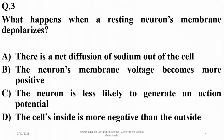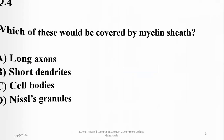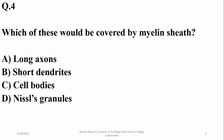What happens when a resting neuron's membrane depolarizes? When a resting neuron membrane depolarizes, the neuron's membrane voltage becomes more positive, there are more positive charges on the inner side, and the neuron is conducting the nerve impulse.